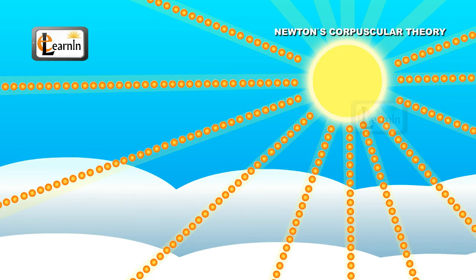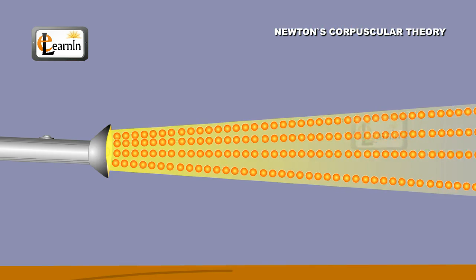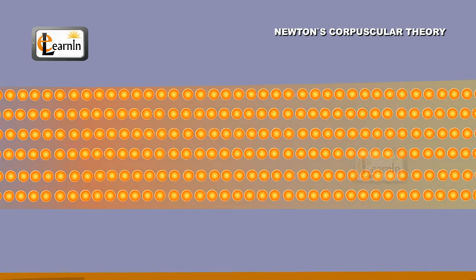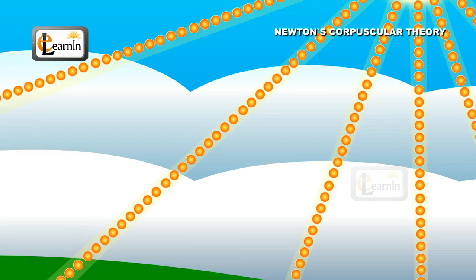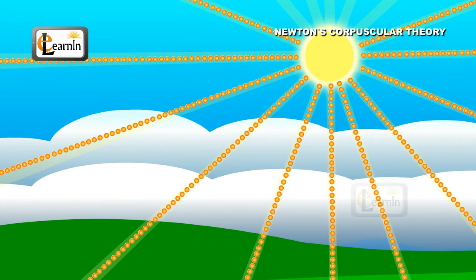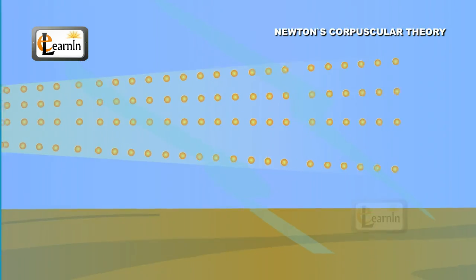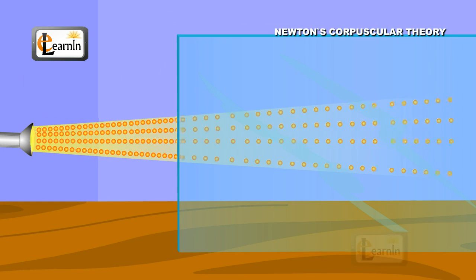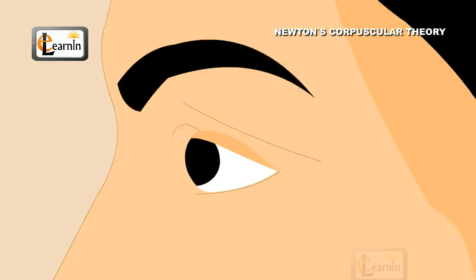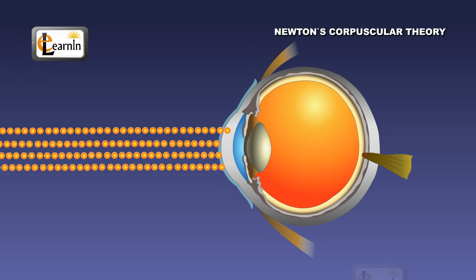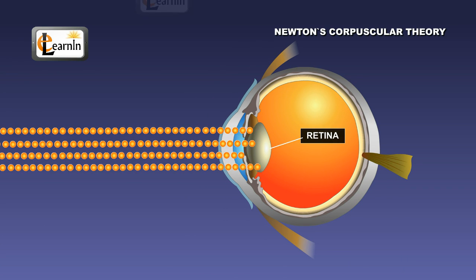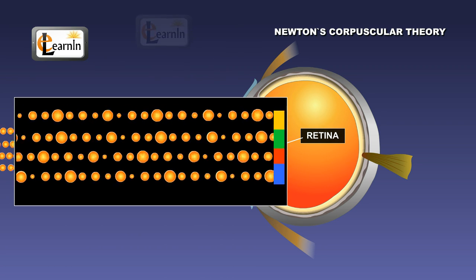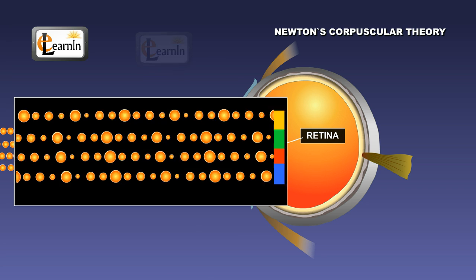Every luminous source, like the sun, a lamp, or a candle, emits these corpuscles. These corpuscles travel in straight lines in all possible directions. The rate at which these corpuscles travel may differ depending on the medium in which they disperse. The vision of human beings is a consequence of these corpuscles falling on the retina of the eyes. Various colors of light are due to the difference in sizes of these corpuscles.